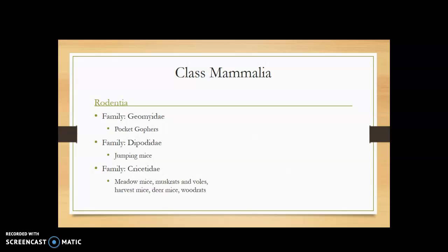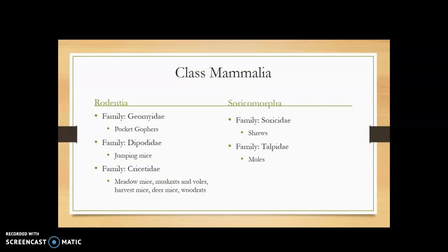In Cricetidae, you have your meadow mice, muskrats, and voles in one subfamily, and your harvest mice, deer mice, and wood rats in another subfamily. Also in Rodentia are your Sciuridae — all of your squirrels. The other really small mammals not in order Rodentia are in Soricomorpha. That's family Soricidae — your shrews — and family Talpidae — your moles.